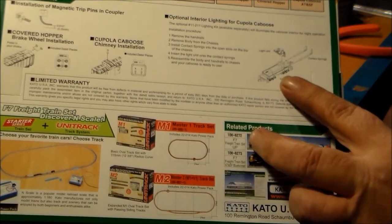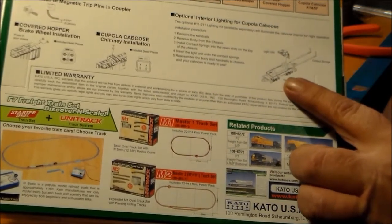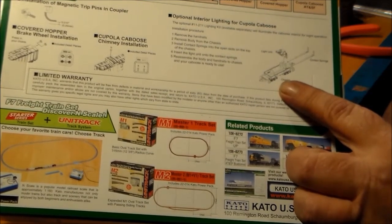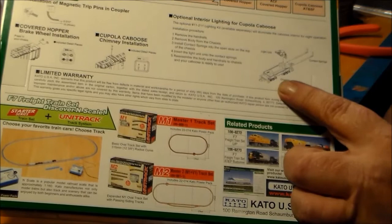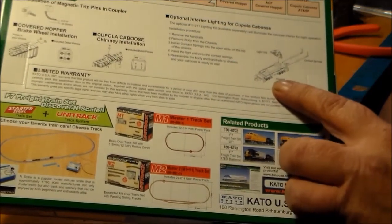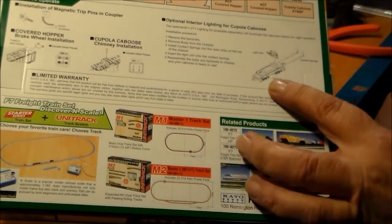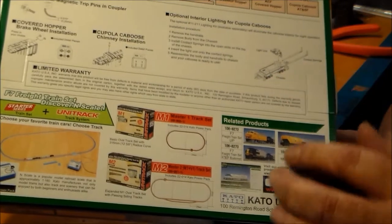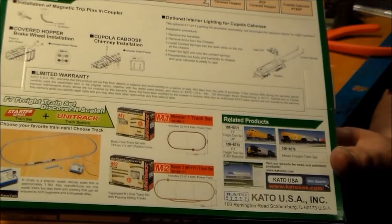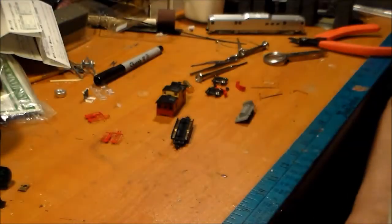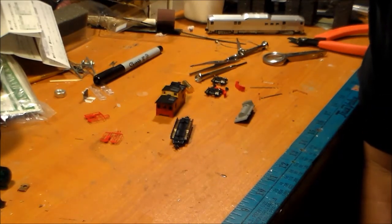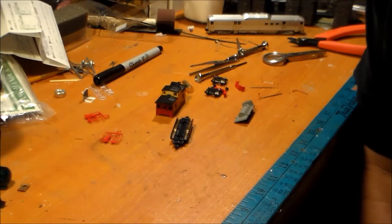I found out the caboose can be lit up using one of the light kits from Kato. I thought that was a pretty cool asset. I know a lot of guys don't like lights in the caboose - they really didn't run with them lit - but I've got some grandchildren that are going to love a light in the caboose. I spent several hours last night trying to figure it out. The instructions are kind of vague.